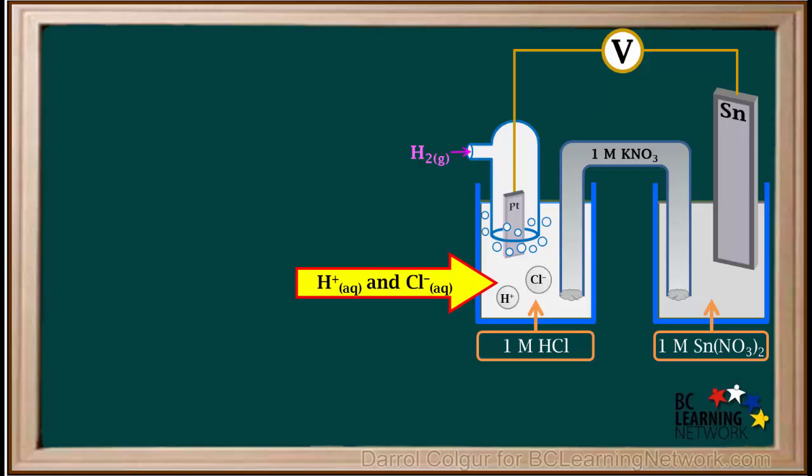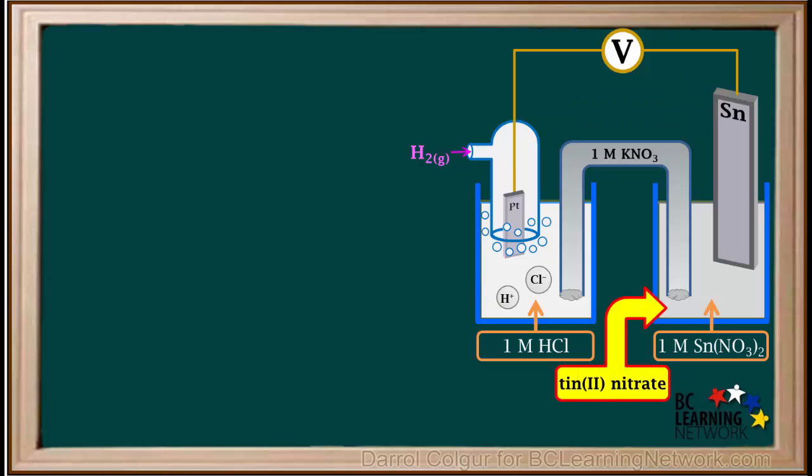Hydrochloric acid contains aqueous hydrogen ions and chloride ions. The beaker on the right has a tin electrode, immersed in a solution of 1 molar tin 2 nitrate, which contains aqueous Sn²⁺ ions and nitrate ions.